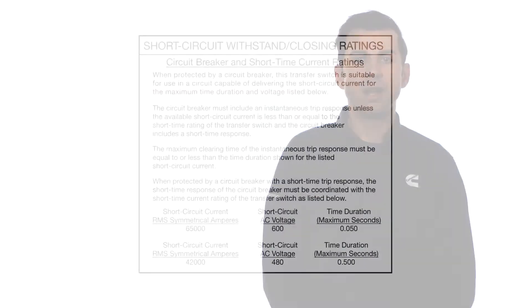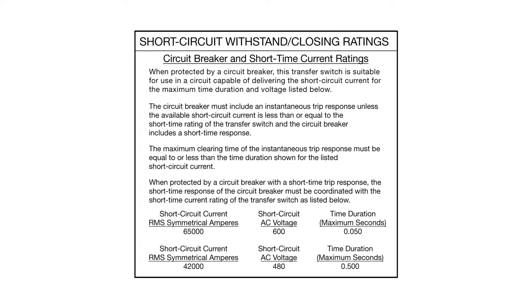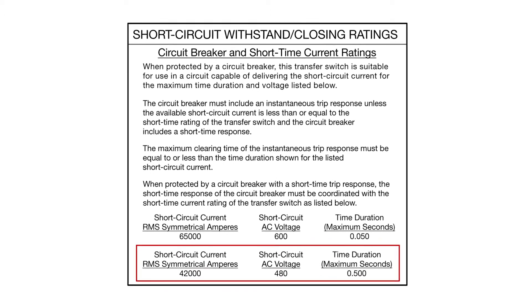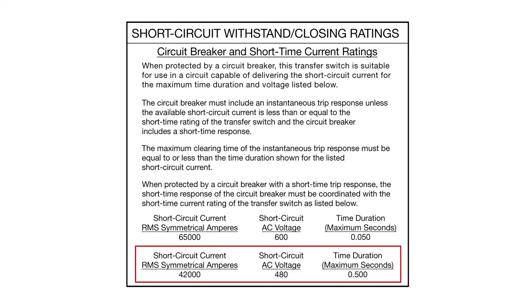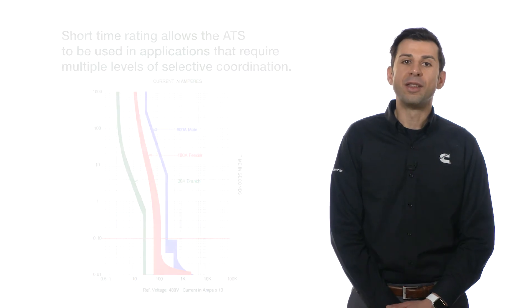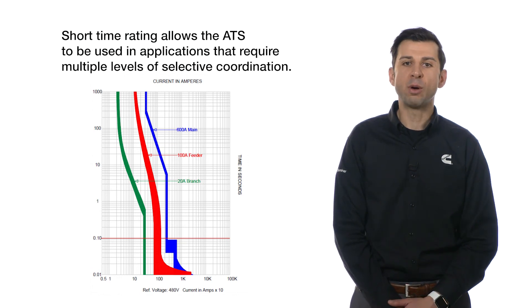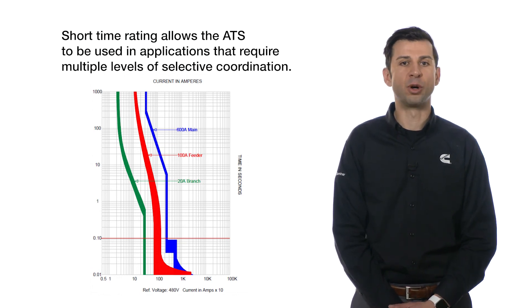The 800-amp transfer switch has a short-time rating of 42,000 amps at 480 volts AC for half a second, or 30 cycles. This means the transfer switch can handle 42,000 amps of fault current for half a second, and the upstream protection device must clear the fault in half a second or less. This short-time rating allows more flexibility for the ATS to be used in applications such as healthcare, which requires multiple levels of selective coordination.